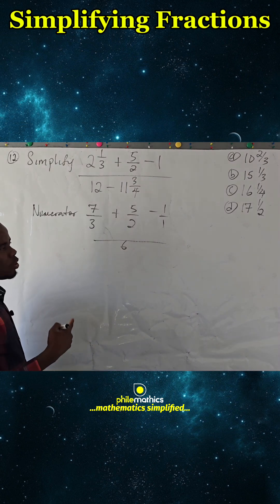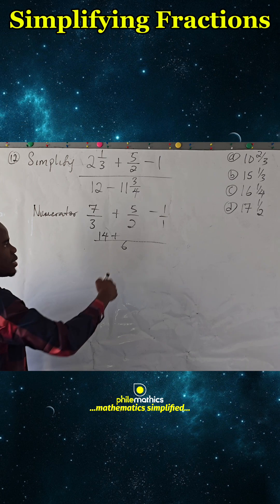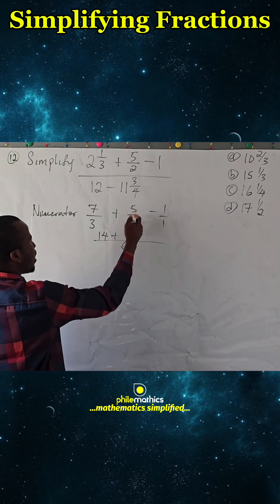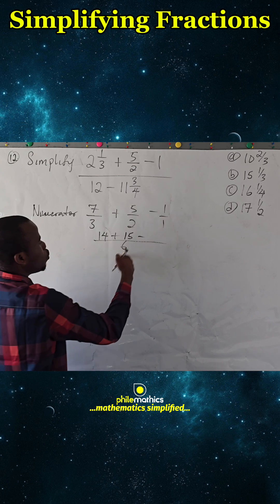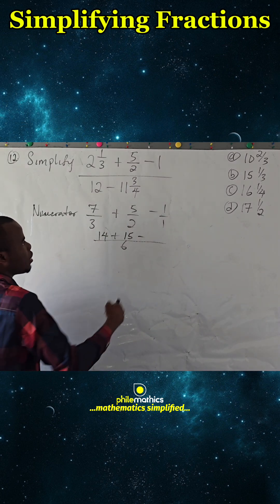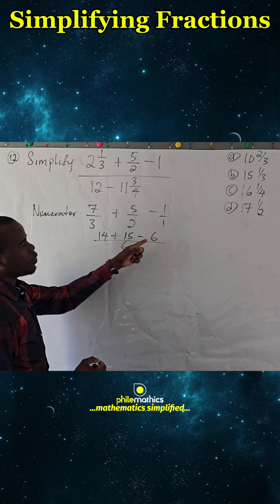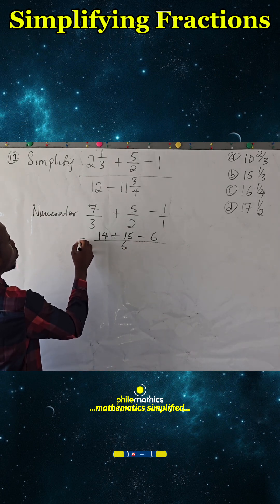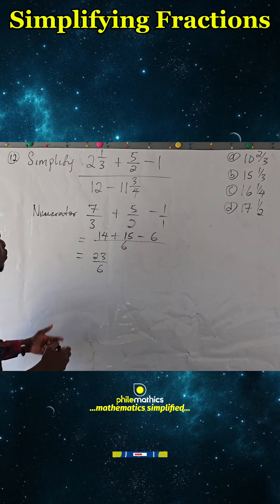3 into 6 is 2, times 7 is 14. 2 into 6 is 3, times 5 is 15. 1 into 6 is 6, times 1 is 6. This is 29 minus 6, which is 23. So we have 23 over 6.